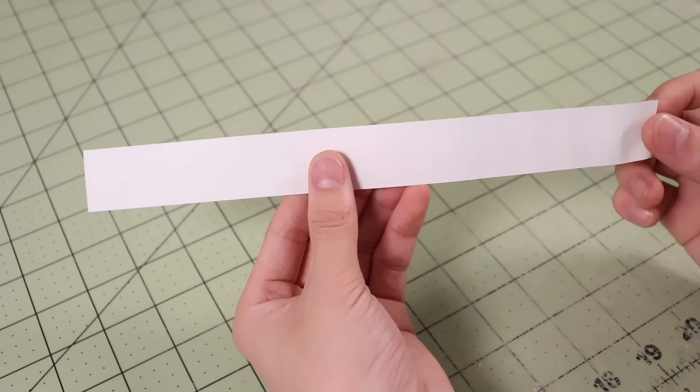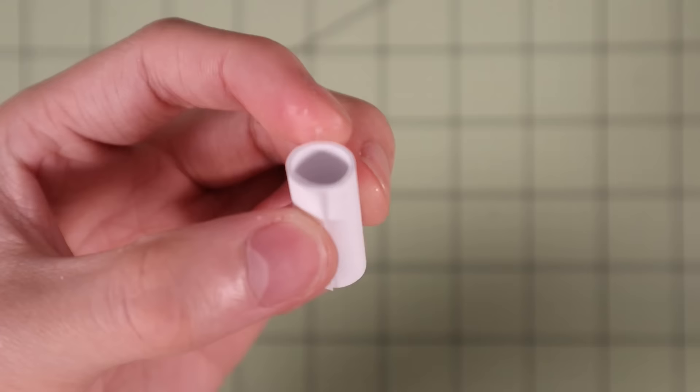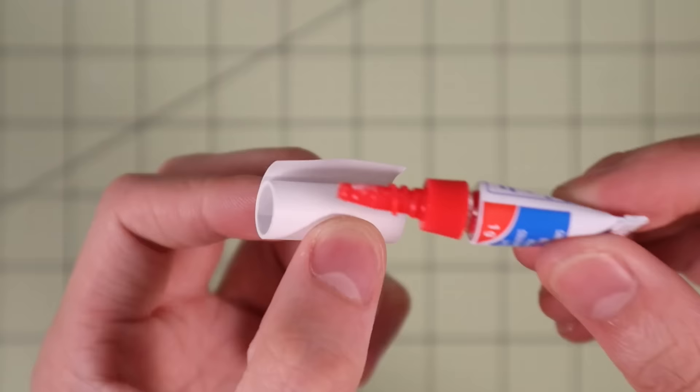To make the barrel I'm going to roll up a thin strip of paper like this. I measured the outer diameter of this tube to be about seven-sixteenths of an inch before gluing the end of the paper shut.